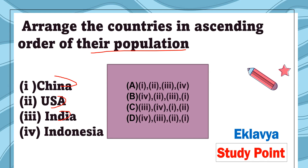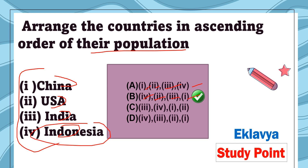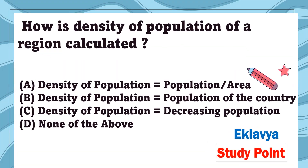Question 18: Arrange the countries in ascending order of their population — China, USA, India, Indonesia. The correct answer is option B: Indonesia (4th), then USA (2nd), then India (3rd), then China (1st, with the highest population).